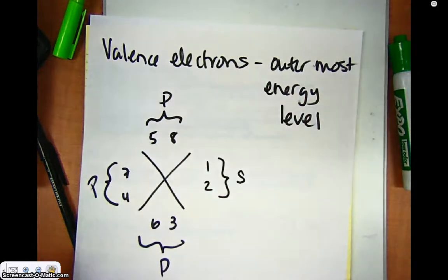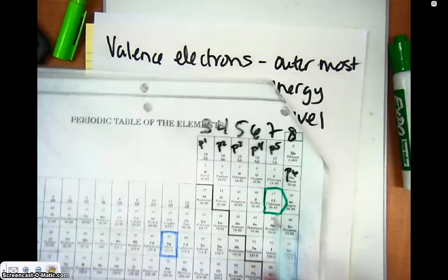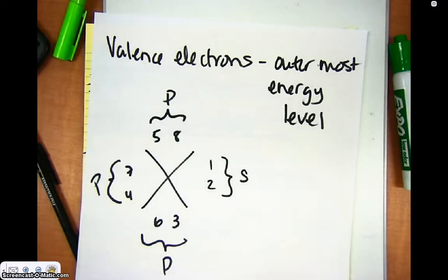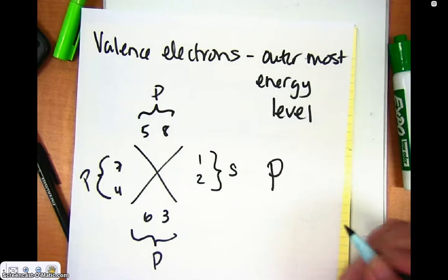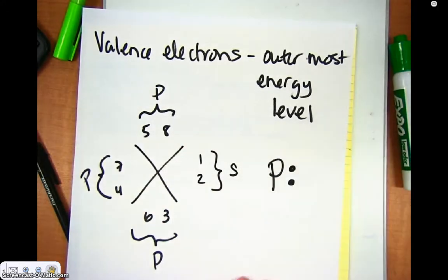Okay, so if I'm going to show the electron dot structure, let's just pick one, let's pick phosphorus. So phosphorus is in the fifth column, so it's got 5 valence electrons. So I would put P for the symbol, and then I put the first two over here, and I draw them like dots, which is why it's called a dot diagram.